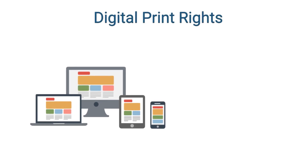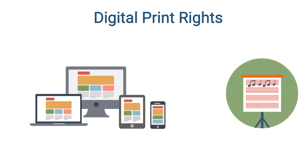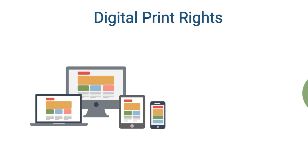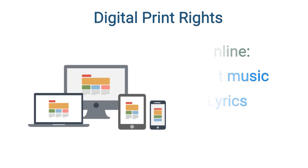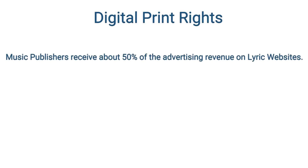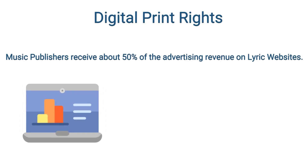Digital print rights: digital printing of music on websites has largely replaced the traditional printing of music on paper. For the most part, interested parties consider sheet music and lyrics on the internet to be a form of printed music, and therefore an exploitation of print rights. Lyric websites are a significant source of revenue for music publishers, who often receive about 50% of the advertising revenue for allowing sites to reprint lyrics.